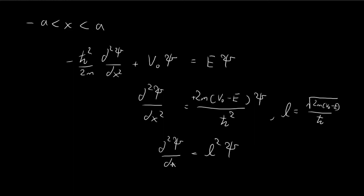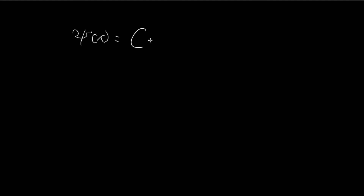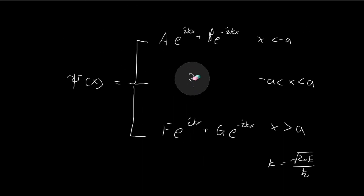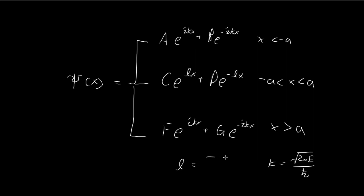Once again we get a familiar differential equation, and the solution ψ of x is equal to C times e to the power of lx, plus D times e to the power of negative lx. This solution is applicable for the region where x is between negative and positive a, where l equals the square root of 2m(V₀ − E) divided by ħ. This is a preliminary result. We'll use these expressions to derive the transmission coefficient by exploiting the continuity conditions for ψ of x, which we will do in the next video.